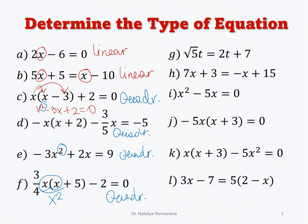Next: the square root of 5 times t equals 2t plus 7. We can see variable t has exponent equal to 1, so it is a linear equation.